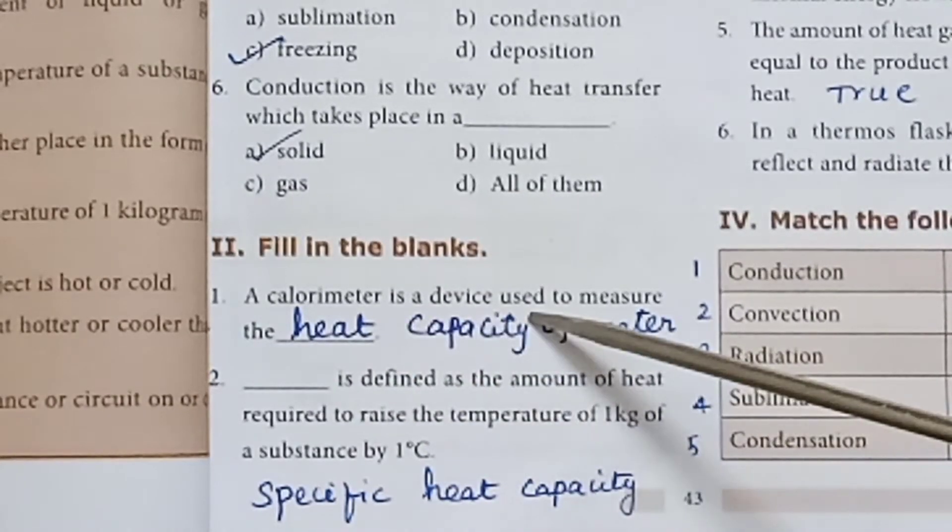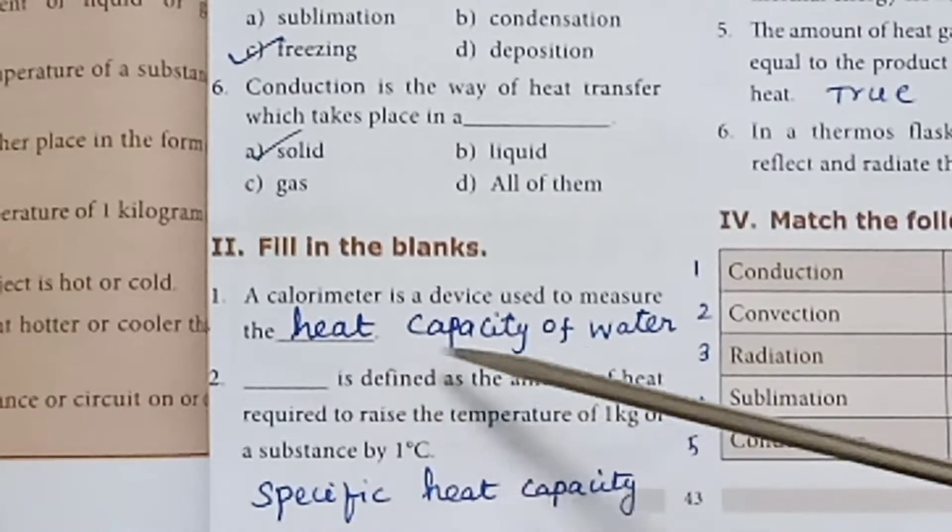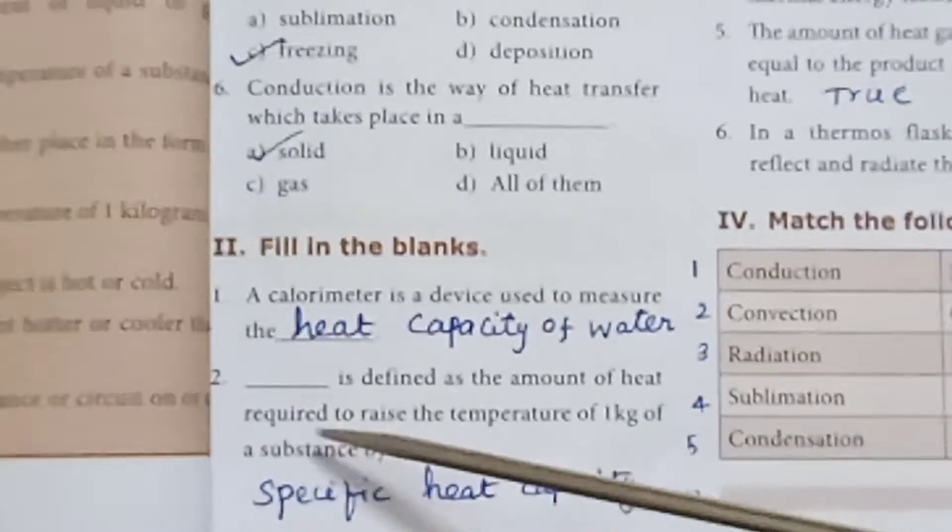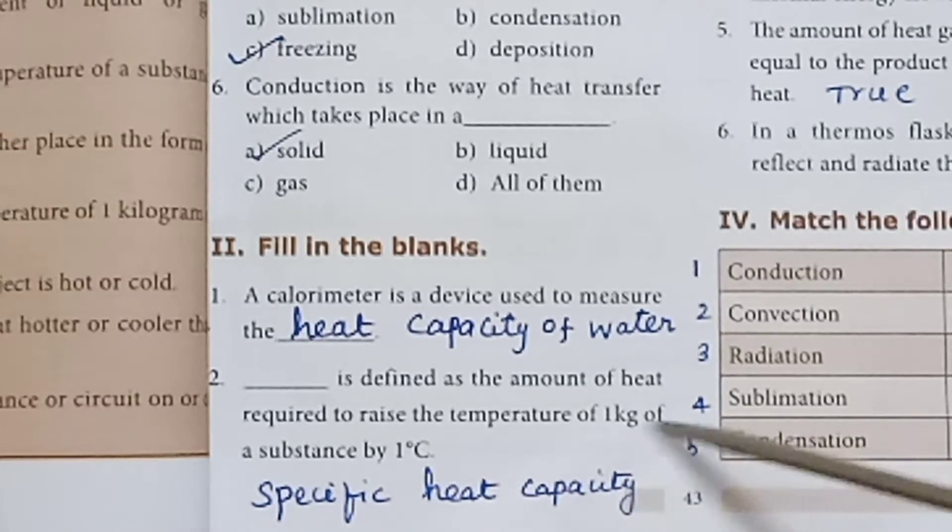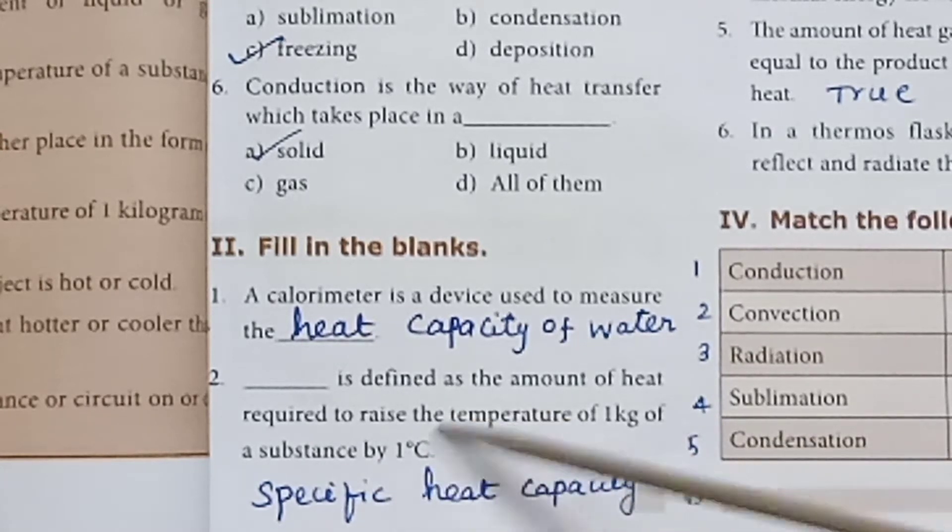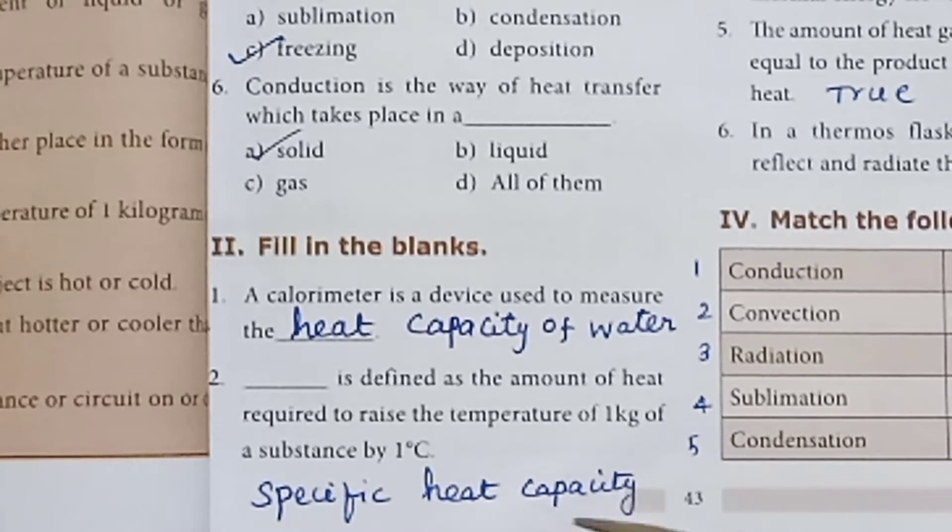A calorimeter is a device used to measure the heat capacity of water. Specific heat capacity is defined as the amount of heat required to raise the temperature of 1 kg of substance by 1 degree Celsius.